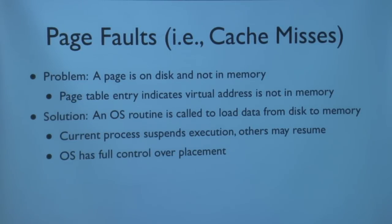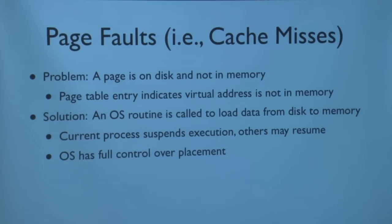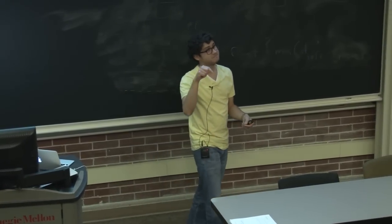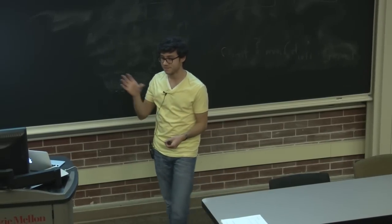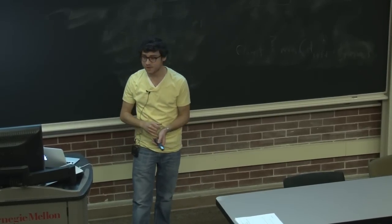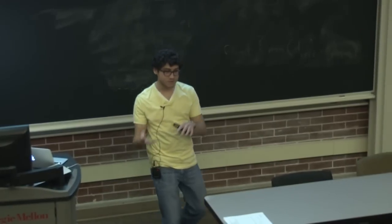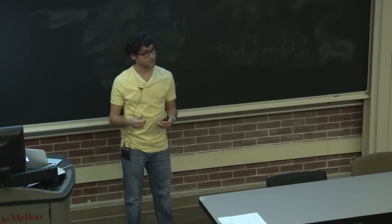We normally want to access data from main memory because it's fast. When we can't, that's called a page fault in virtual memory terminology. A page fault means the page you want to access is on disk rather than in main memory. In the page table, there's a bit indicating this page isn't in memory — it's on disk, you need to go fetch it from this location. This is handled via an OS routine; the OS is in charge of managing how you load data from disk into memory.